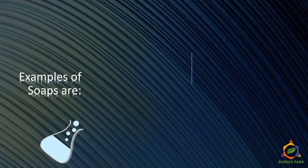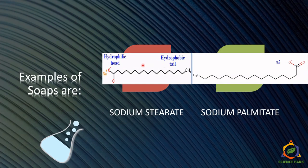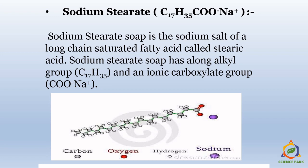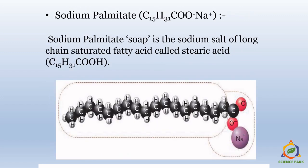There are two examples of soaps: sodium stearate and sodium palmitate. In the structure of sodium stearate, there are 17 carbon atoms and 35 hydrogen atoms linked to each other. The red atoms are oxygen atoms; the chain ends with a carboxylic group, and the purple atom is sodium. In sodium palmitate, there are 15 carbon atoms linked in a chain with 31 hydrogen atoms, and at the end of the chain is a head with a carboxylic group and a sodium atom attached.